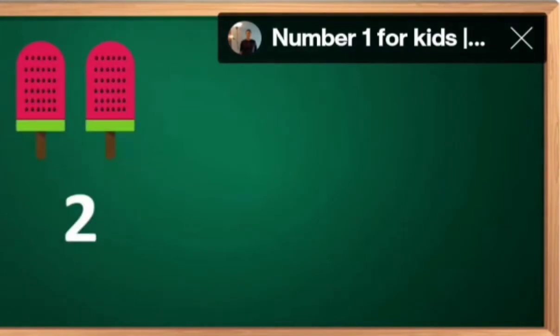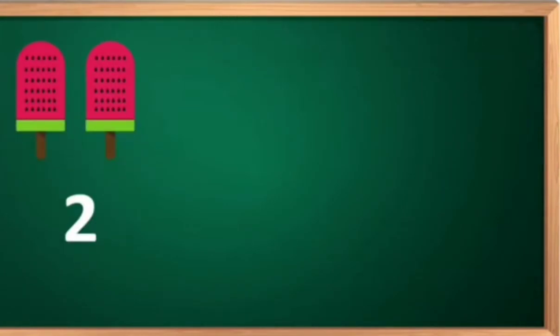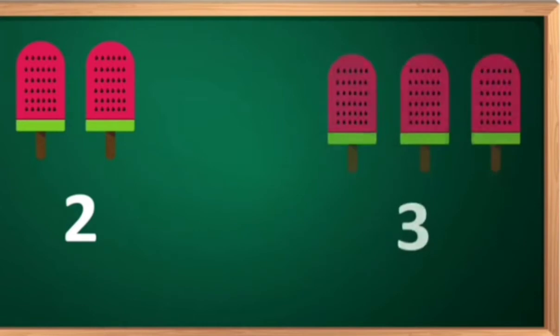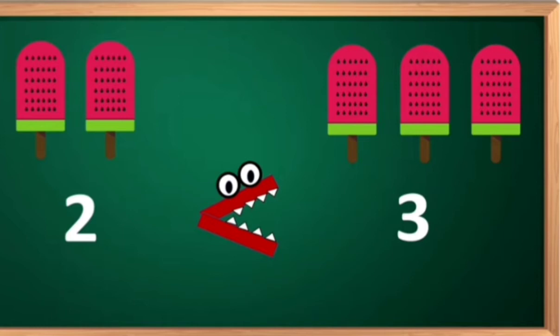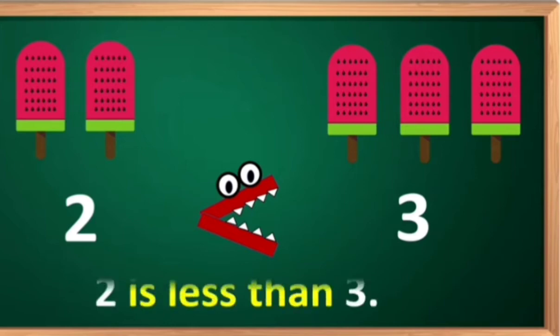Next example. There are two ice creams, and there are three ice creams. Which side will the crocodile open its mouth? Towards number three, because three is bigger than number two. Three is greater than number two, and two is less than three.